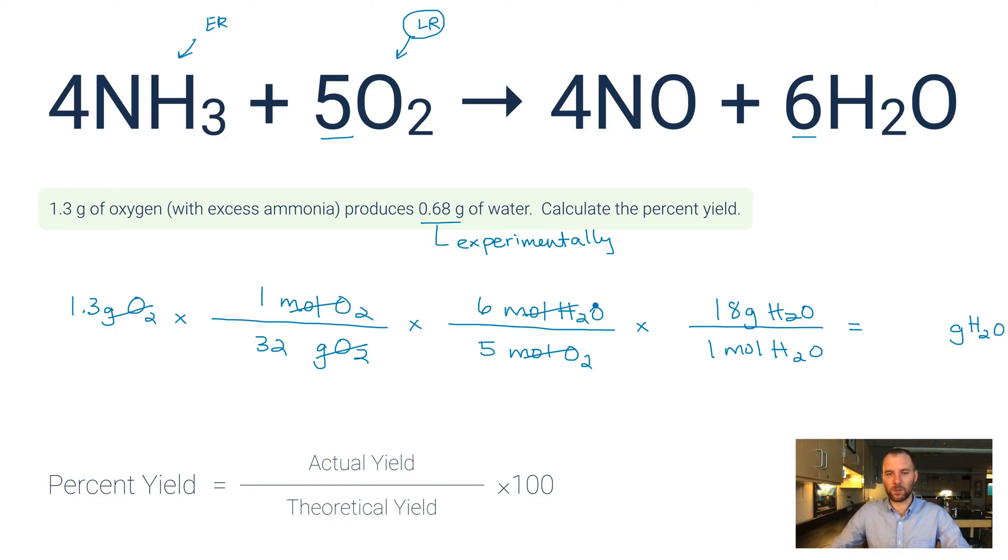Okay, so now you've canceled out moles of water—you've got just grams of water there, perfect, because that's what we're after. Grab your calculator and you type in 1.3 times 6 times 18 divided by 32 divided by 5, and that gives you 0.88. Now this is the theoretical—this is according to the calculations. If everything went perfectly, you'd be forming 0.88 grams of water.